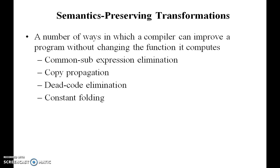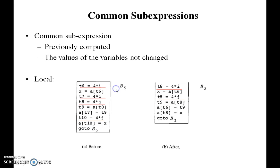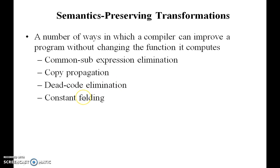The optimization takes place based on different factors — the compiler can improve your program without changing any functions or the name of the program. There are four types of actions that take place in optimization: the first one is common sub-expression elimination, the second one is copy propagation, the third one is dead code elimination, and the fourth one is constant folding.